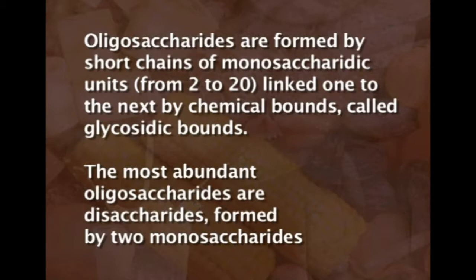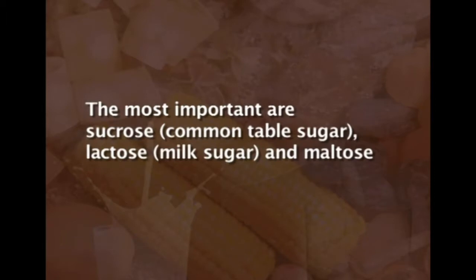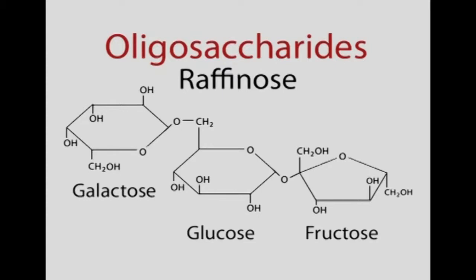The most abundant oligosaccharides are disaccharides, formed from two monosaccharides. The most important in human nutrition are sucrose — the common table sugar — lactose, the milk sugar, and maltose.